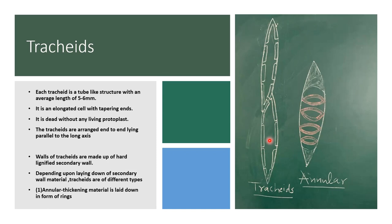The first-formed wall of the tracheids is called the primary wall. Thickenings are later deposited on the tracheids — this is called secondary wall material. This may be made up of lignin. Lignin is a chemical, and when it is deposited this is also called lignification. Because of different kinds of secondary wall material, tracheids are categorized into different categories.